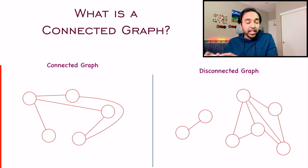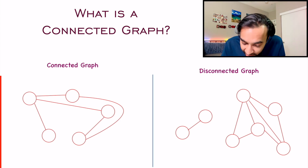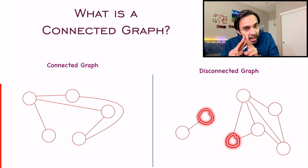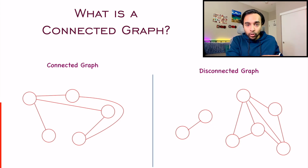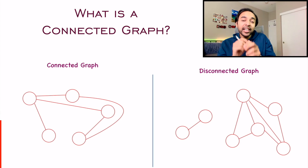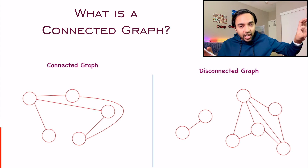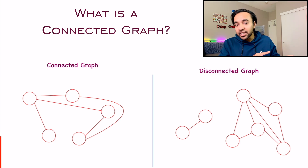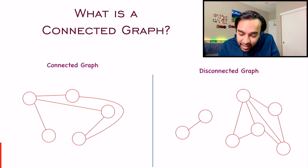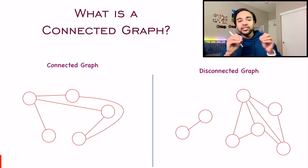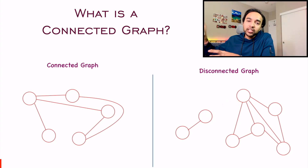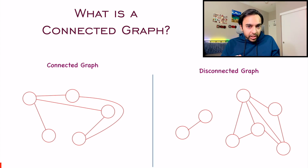On the right hand side, what I have is a disconnected graph. If you notice, these two nodes are not connected at all. There is no way that if you start from this node, you can reach that other particular node. So that is why this is known as a disconnected graph. As long as there is any path between any two nodes on the graph, then that is a connected graph, otherwise it is a disconnected graph.